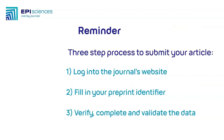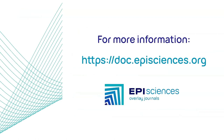Reminder — three-step process to submit your article. Step 1: Log into the journal's website. Step 2: Fill in your preprint identifier. Step 3: Verify, complete, and validate the data. For more information, please consult the documentation on Episciences' website.